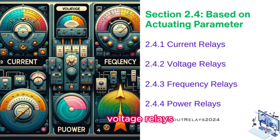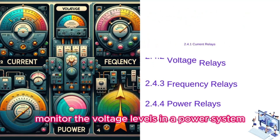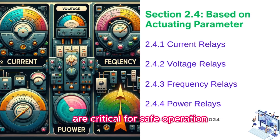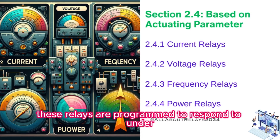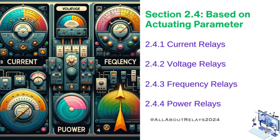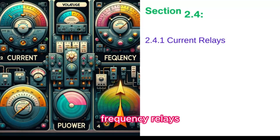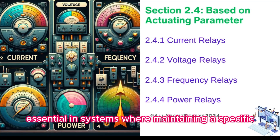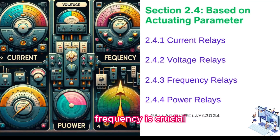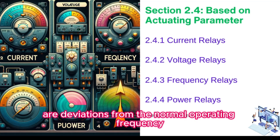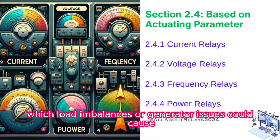Voltage relays monitor the voltage levels in a power system. They are vital in applications where voltage thresholds are critical for safe operation. These relays are programmed to respond to undervoltage or overvoltage conditions, ensuring the stability and health of the electrical network. Frequency relays are essential in systems where maintaining a specific frequency is crucial, such as in power generation. They activate if there are deviations from the normal operating frequency, which load imbalances or generator issues could cause.